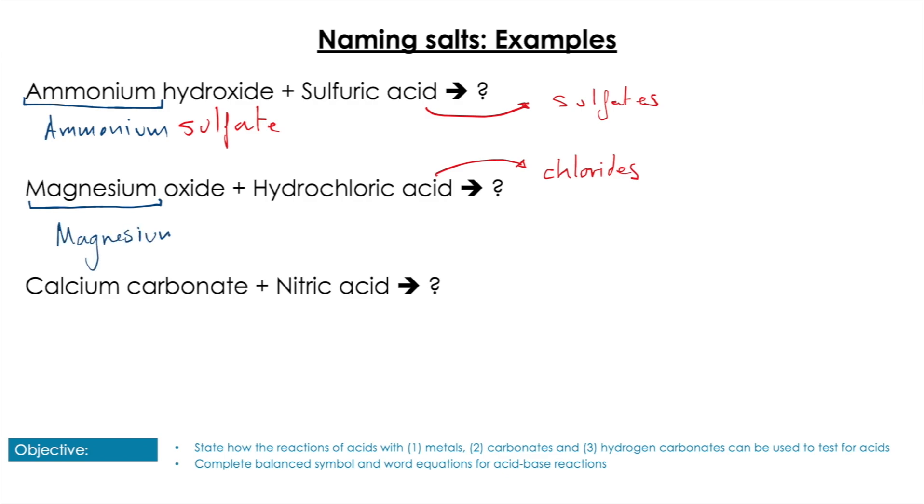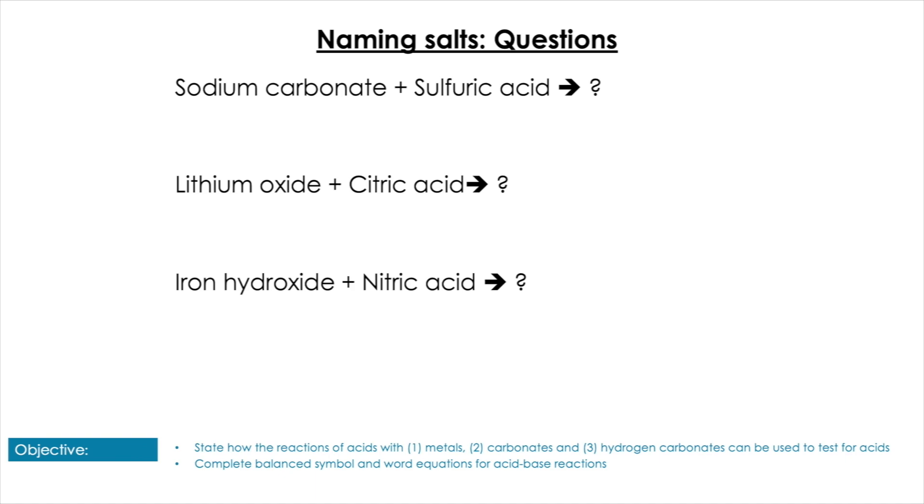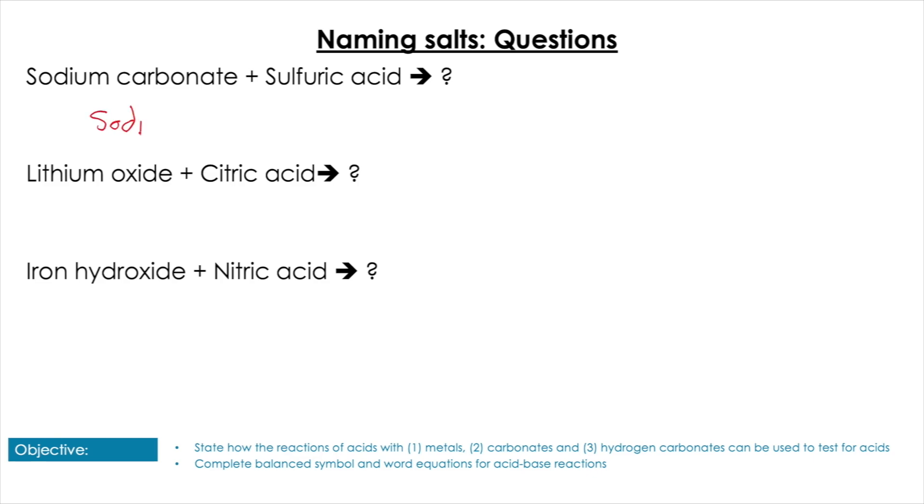Lastly, I have calcium carbonate and nitric acid. So calcium carbonate being my base means I have calcium as my first word, and nitric acid forms nitrates, so the salt produced in this reaction is going to be calcium nitrate. So give yourself some practice and try these ones here. Pause the video, give yourself some time for that. Going through those then, sodium carbonate and sulfuric acid is going to give us sodium sulfate. Lithium oxide plus citric acid is going to give us lithium citrate. Iron hydroxide plus nitric acid is going to give us iron nitrate.